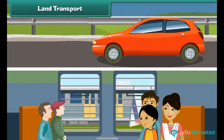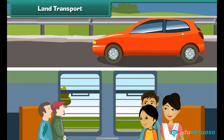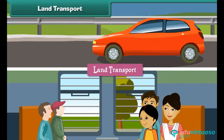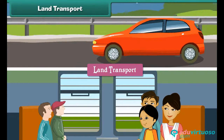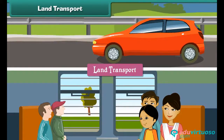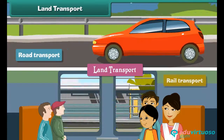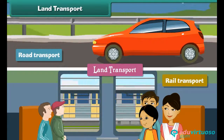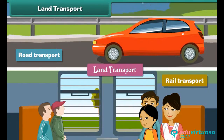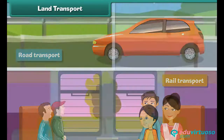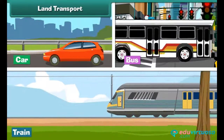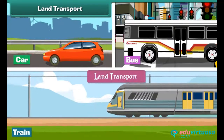Land transport. The movement of goods and passengers on land is known as land transport. Land transport is of two types: road transport and rail transport. The vehicles that carry passengers and goods by land, such as cars, buses, and trains, are called means of land transport.